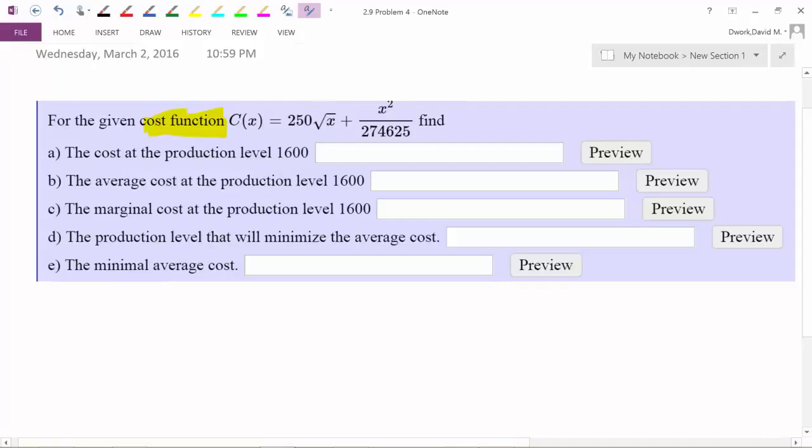Let's start reading what they want us to do and figure out what we do with this equation. If we need to alter it, if we need to take derivatives, let's find out. So the first question says the cost at the production level 1600. Well if they're asking us to find the cost at the production level of 1600, then what does that mean?